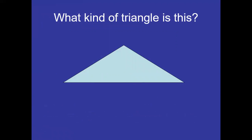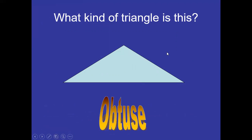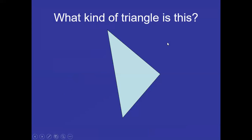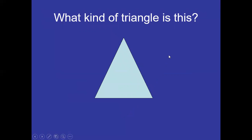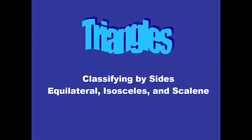Let's review: what type of triangle is this? It's an obtuse triangle because one angle is obtuse. What kind of triangle is this? It's a right triangle because this angle is 90 degrees. And this one is an acute triangle because all three angles are acute. That covers the classification of triangles based on angles.